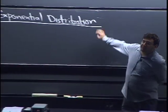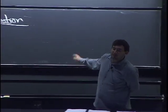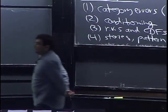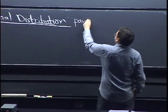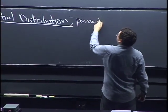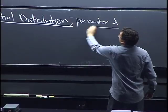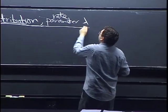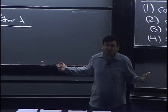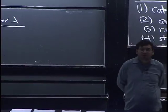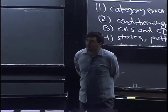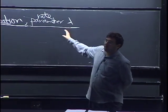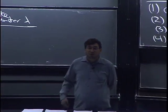So this is our formal introduction of the exponential distribution. It has one parameter, lambda, usually called lambda — that's the traditional name, though you could call it whatever you want. I'm going to call this a rate parameter, because intuitively we can think of it as the rate at which some type of event occurs.